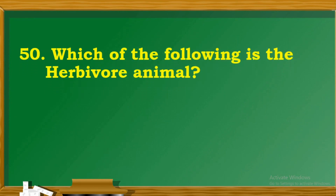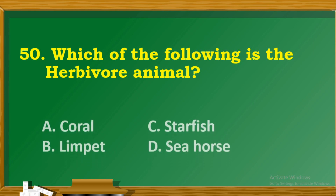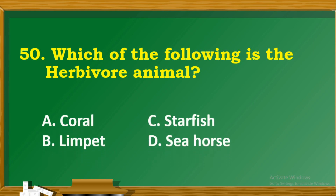Question 50: Which of the following is the hermit crab's poor animal? A. Coral. B. Limpet. C. Starfish. D. Seahorse.